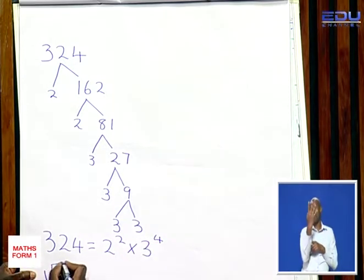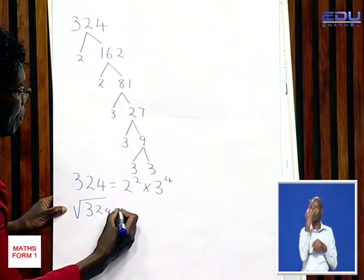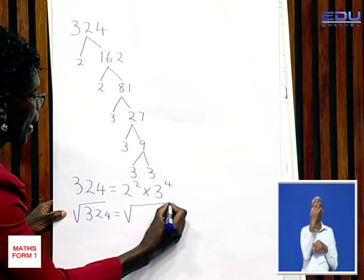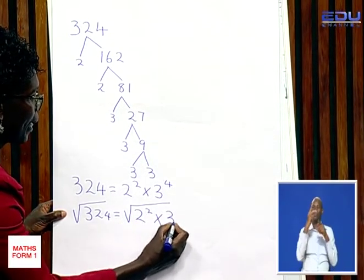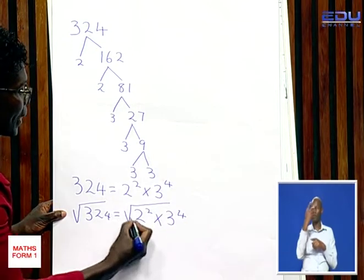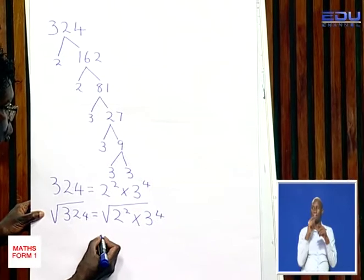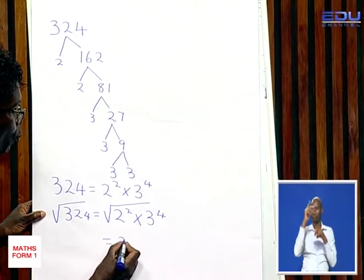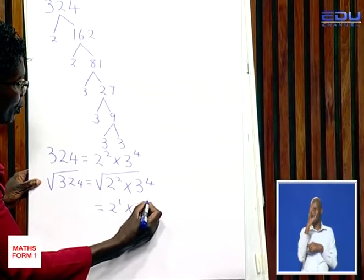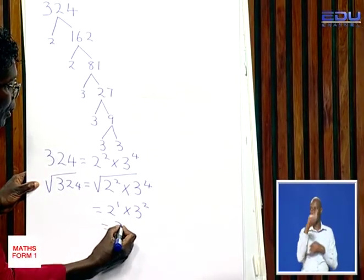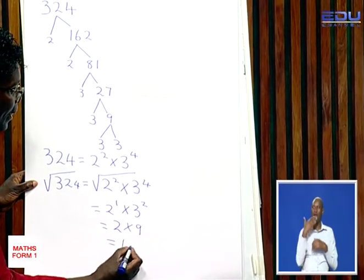Now, to get the square root of 324, it will be equal to the square root of 2 squared times 3 to power 4. To get the square root, divide the powers by 2. So, the answer will be 2 to power 1 times 3 to power 2, which will give us 2 times 9. And the answer is 18.